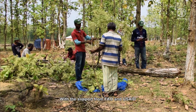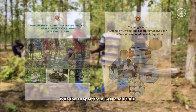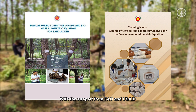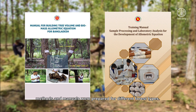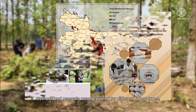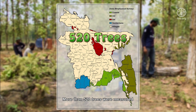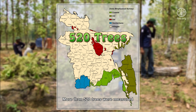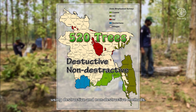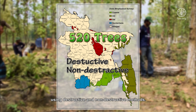With support from FAO and USAID, methods and manuals were prepared for different forest types. More than 520 trees were measured using destructive and non-destructive methods.